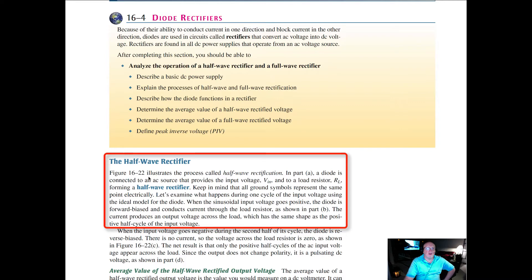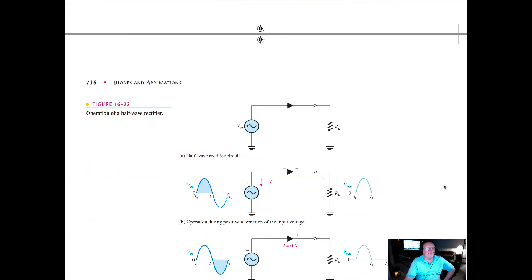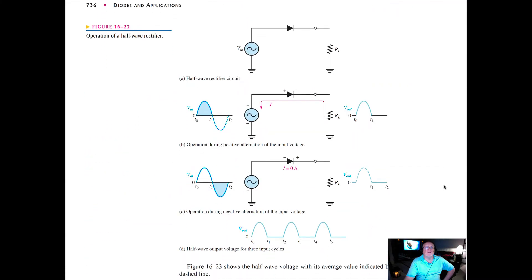If you look in your text at figure 1622, you can see the depiction here of the operation of a half wave rectifier. So there's the simple circuit. We can see on the input we've got a sinusoid and there's something going on here that only allows the positive portion of the sinusoid through and the bottom is chopped off.